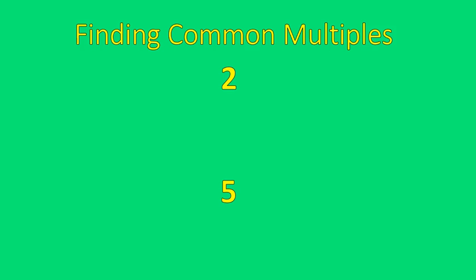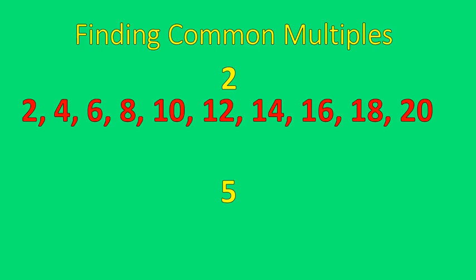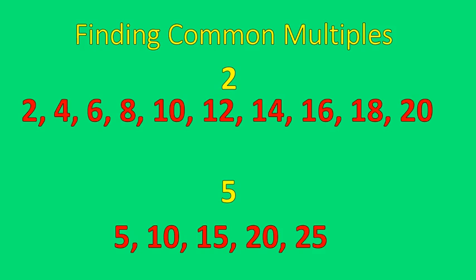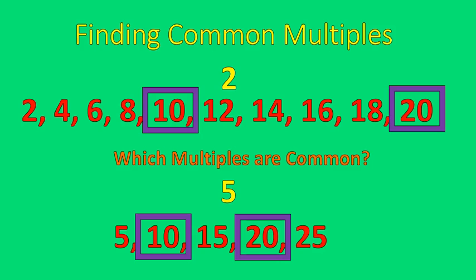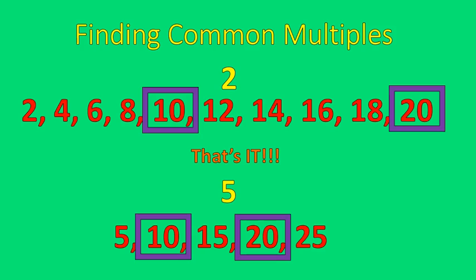Finding common multiples. We are going to take two numbers, 2 and 5, and find common multiples. To do that, you list some multiples. You can't list all of them because you could go from 1 through infinity. So here are some multiples of 2, and now some multiples of 5. Which multiples are common? Well, 10 is common and 20 is common. That's how we find common multiples — list some multiples of each number and find the ones they share.